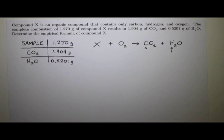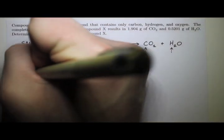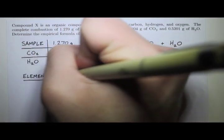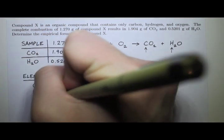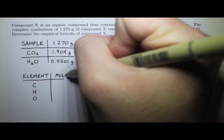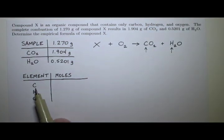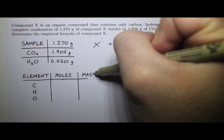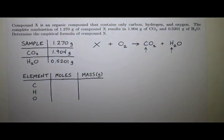So what I recommend when you do this is to first set up a little chart just to keep everything organized. So we have three elements. We have carbon, hydrogen, and oxygen. And then we're going to fill out this chart. And we're going to write out the number of moles of carbon in compound X, hydrogen in compound X, oxygen in compound X. Then we're going to find the mass in grams of each of these things in compound X. And using this table right here, we'll be able to figure out the empirical formula.